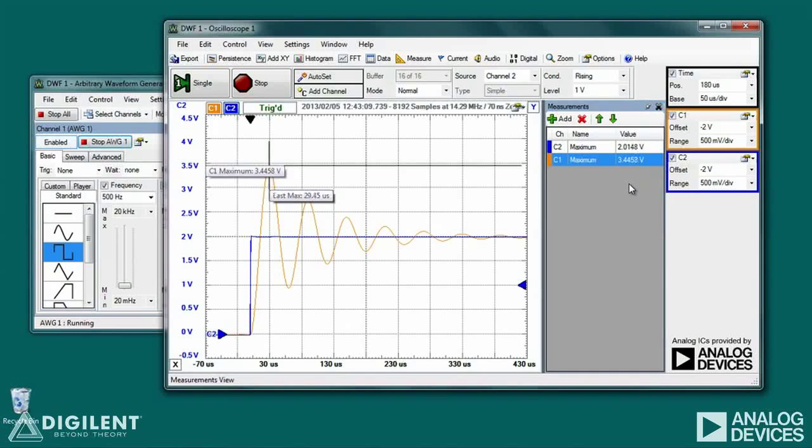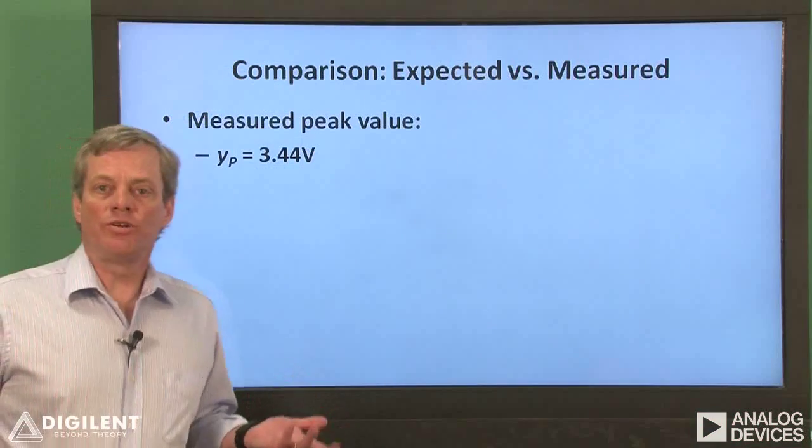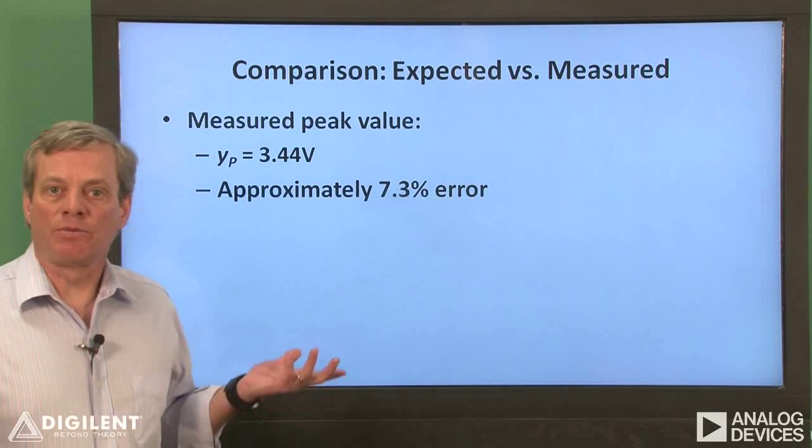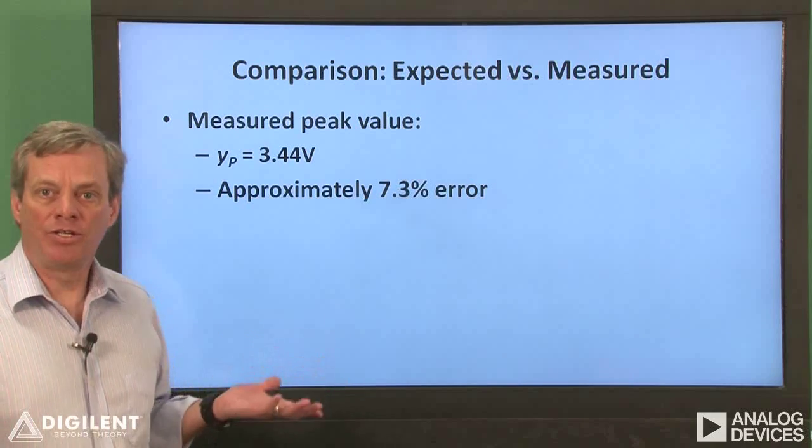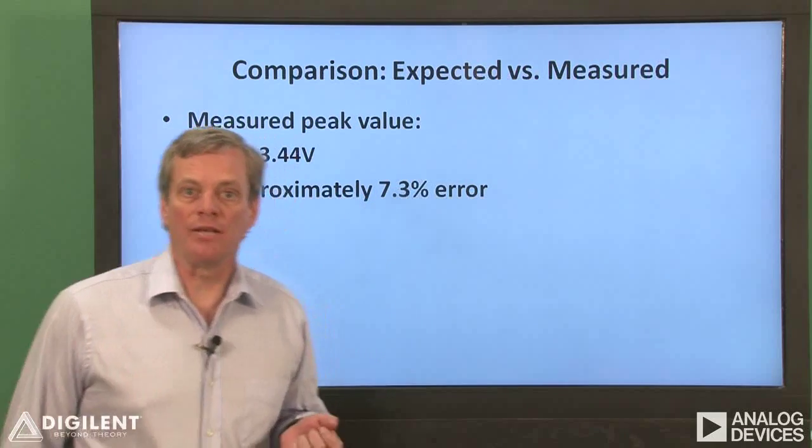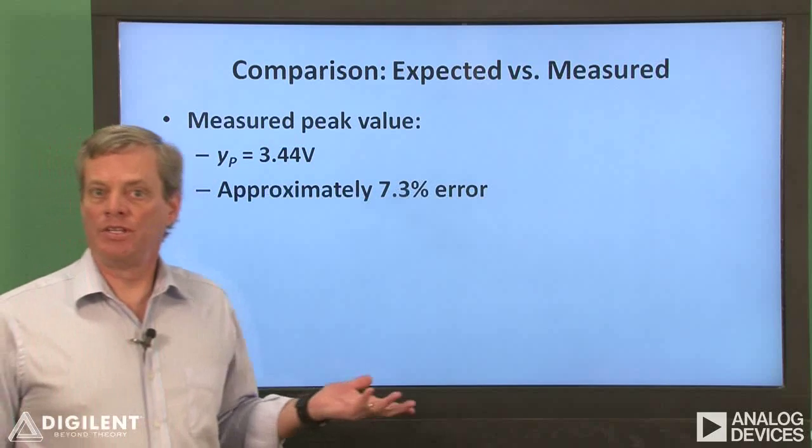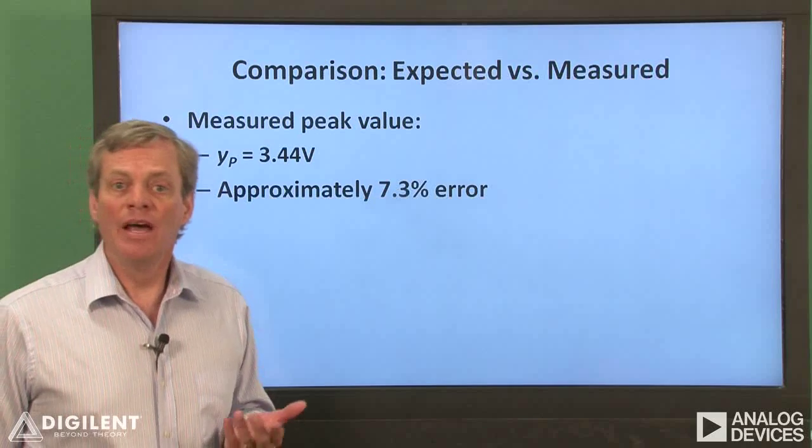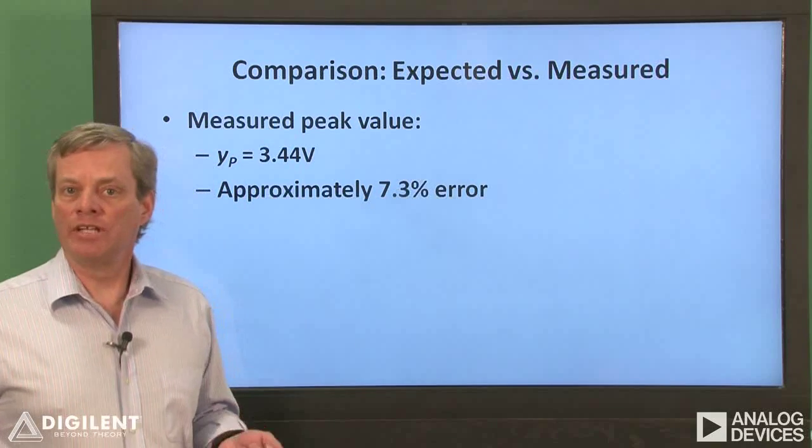Now let's compare our measured value to our expectations. We measured our peak response to be 3.44 volts. This gives us a percent error between our expected and measured values of 7.3 percent, where I define percent error as the difference between the expected and measured values divided by the expected value. This is actually pretty good agreement for a dynamic measurement.